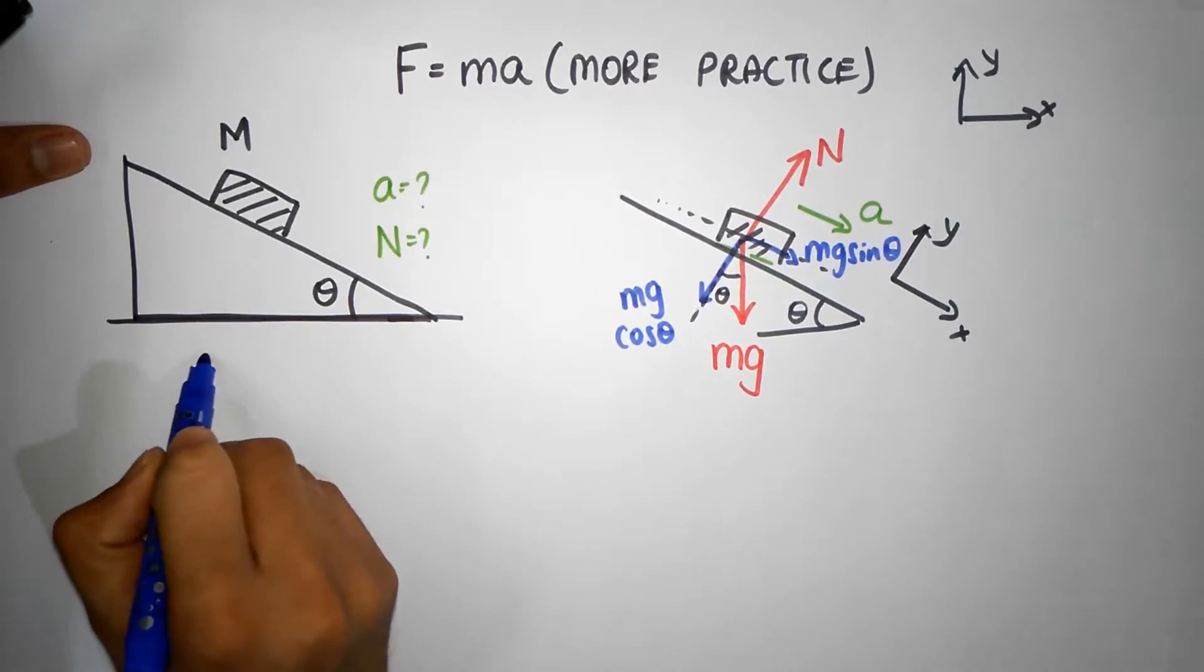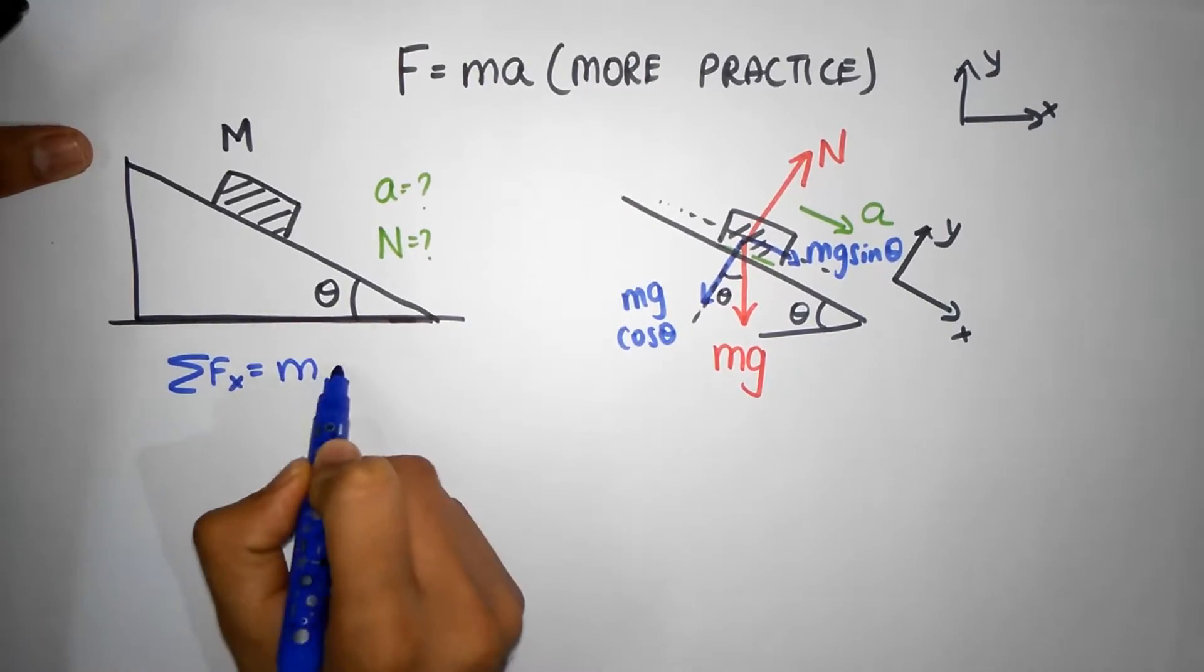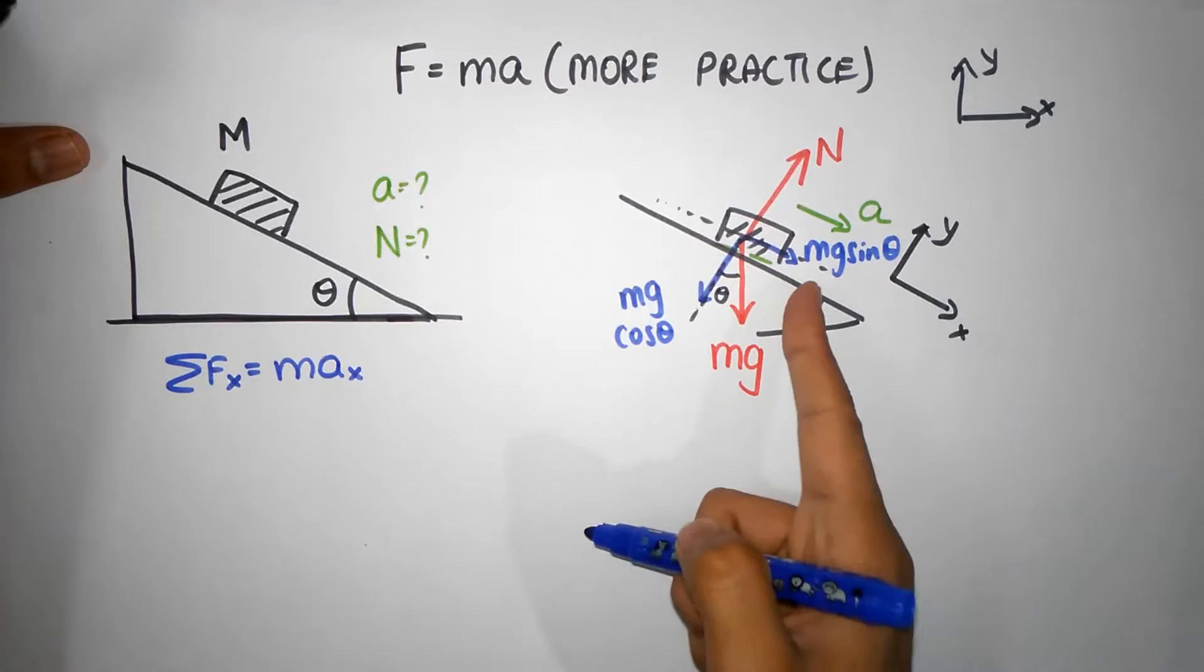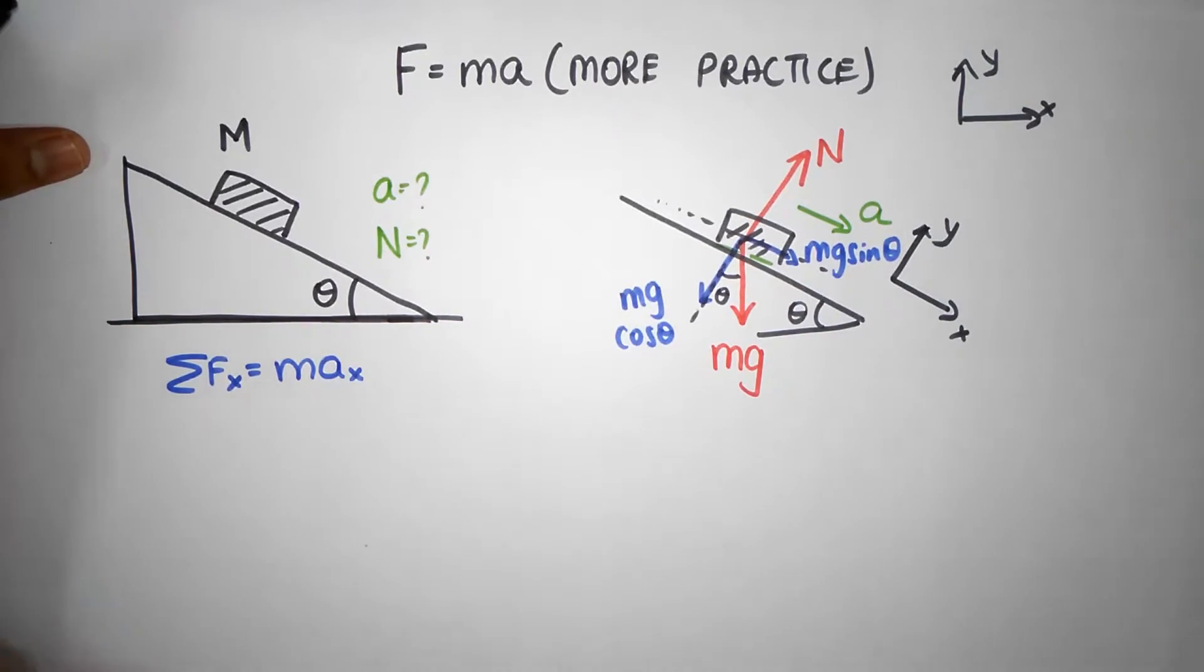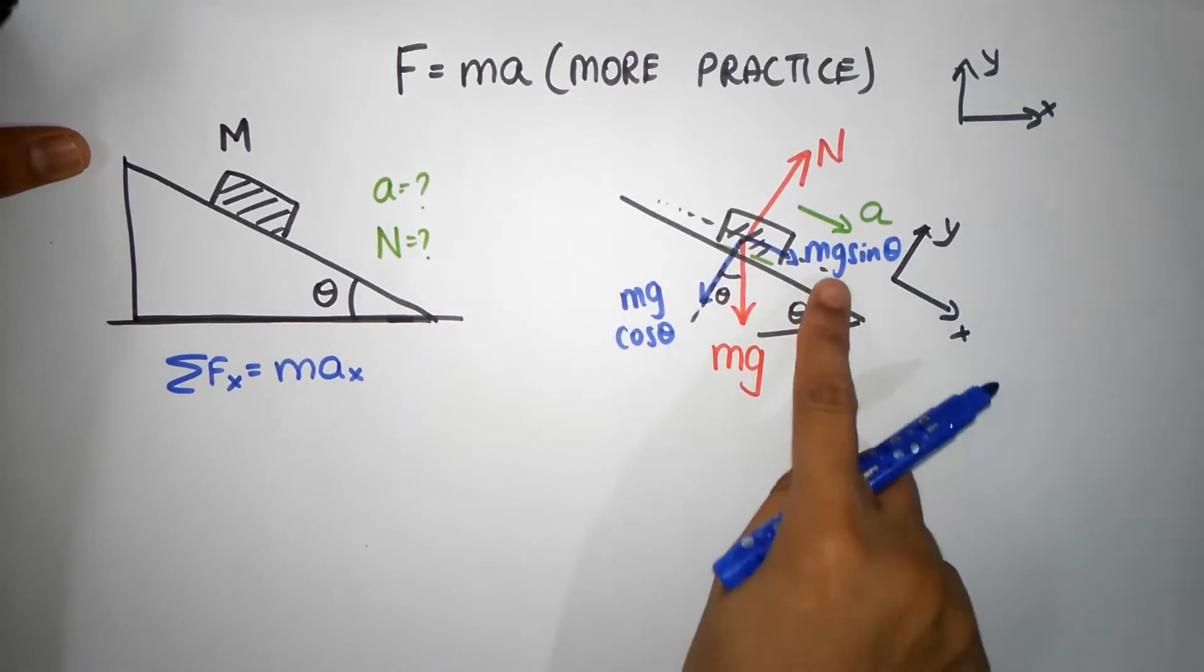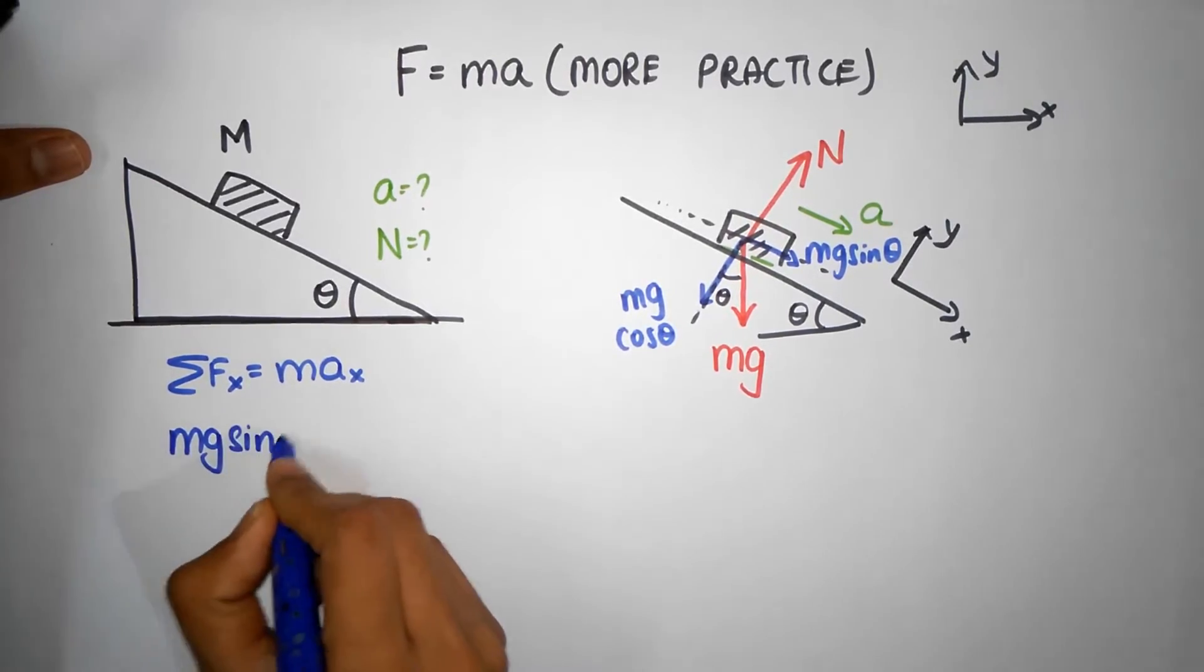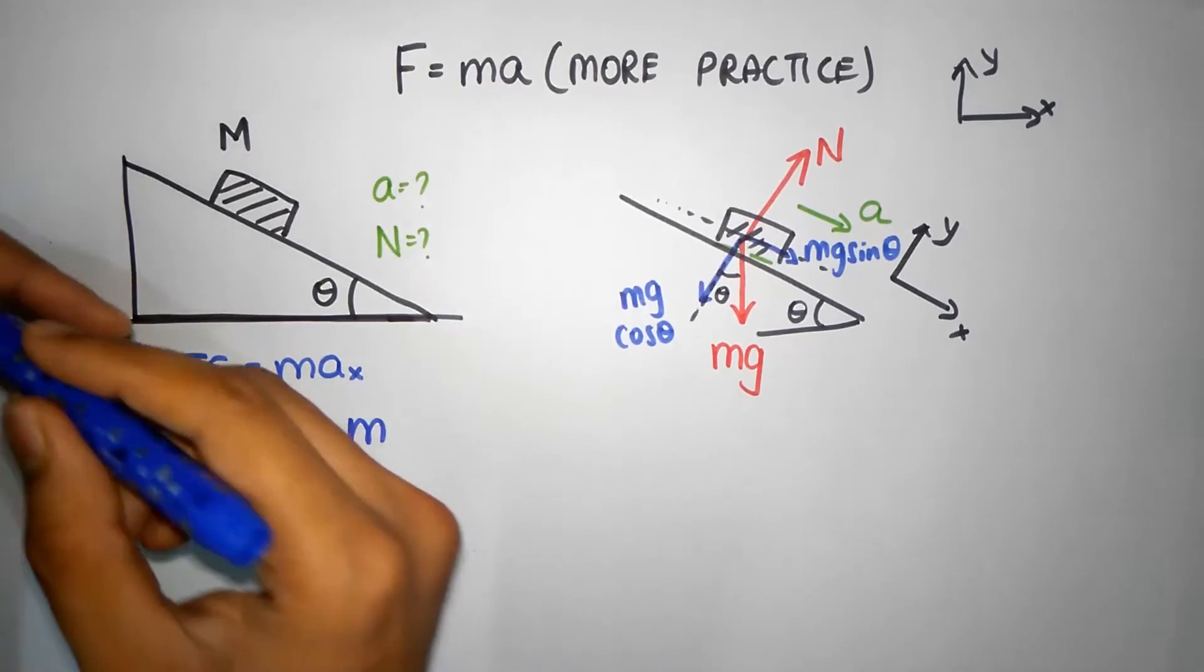Okay, now we can use Newton's second law in the x and y direction. Let's do that. Let's do Newton's second law in the x-direction. That should be equal to mass times the acceleration in the x-direction. Here is my x. I hope this is not too crowded for you. There's only one force in the x-direction which is mg sin theta along the positive. So it's only one force. Let's write that down: mg sin theta.